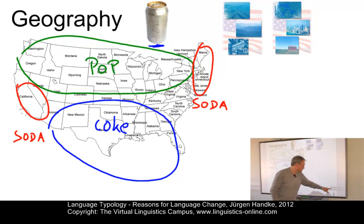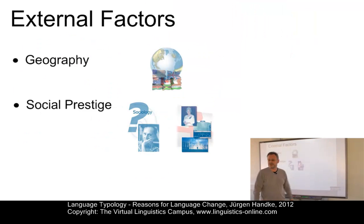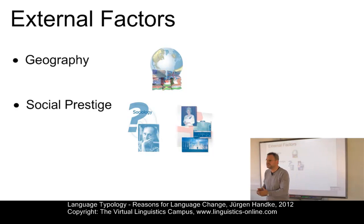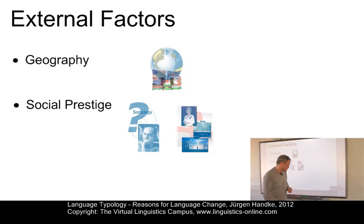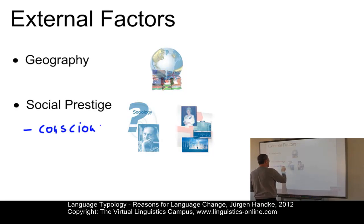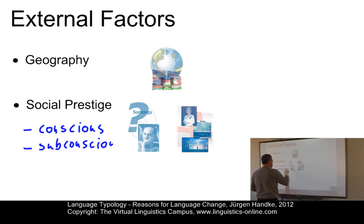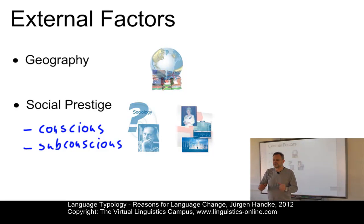A second factor is referred to as social prestige. People come to talk like those they identify with or who they admire. This process may be conscious or subconscious. A conscious change can be observed in those cases where people want to avoid a certain feature in their spoken or written language.